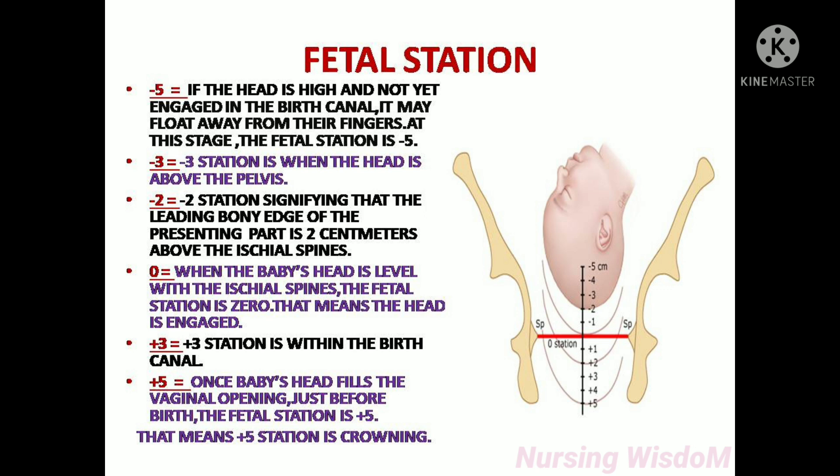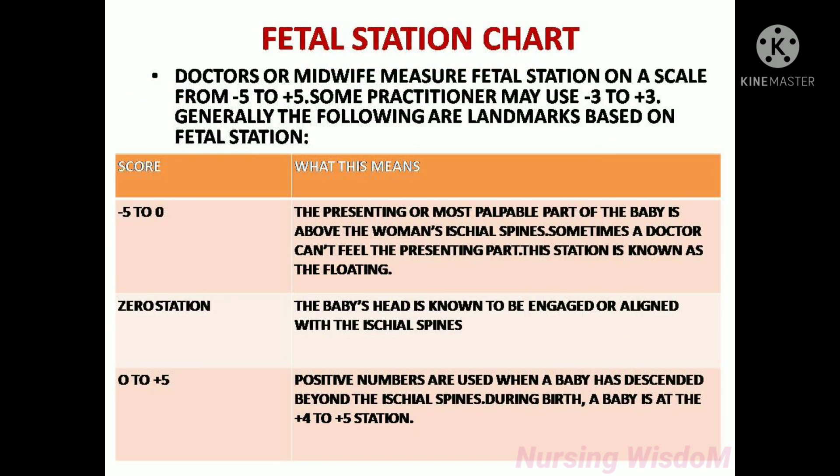When the baby's head is level with the ischial spines, the fetal station is zero, meaning the head is engaged. Plus three station is within the birth canal. At plus five, once the baby's head fills the vaginal opening just before birth, the fetal station is plus five — that means plus five station is crowning.